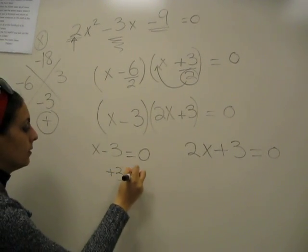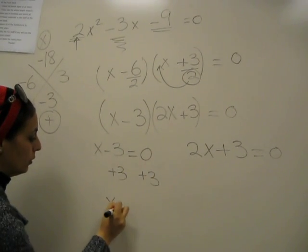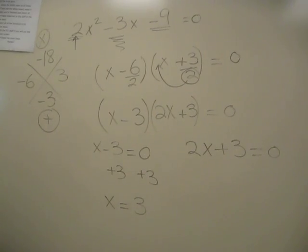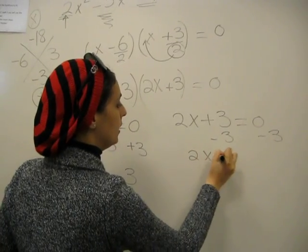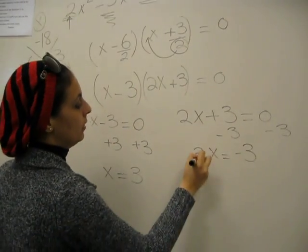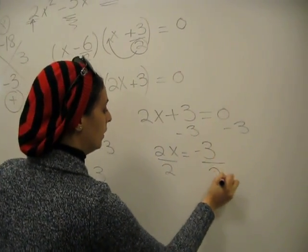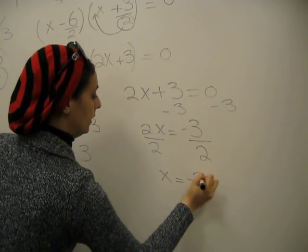By adding 3 to both sides, you would figure out that X equals 3. By subtracting 3 from both sides in this one, you would have 2X equals negative 3. Dividing by 2 would get your final answer, negative 3 over 2.